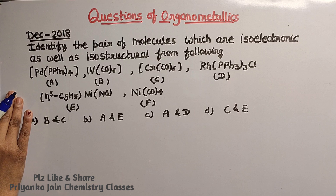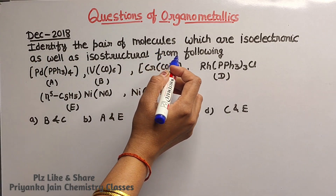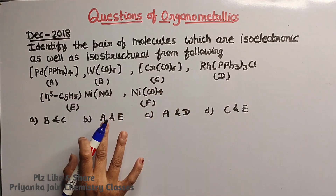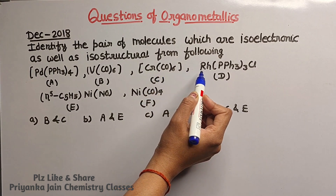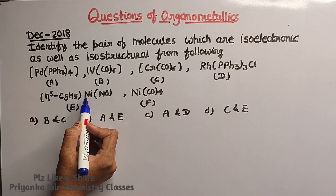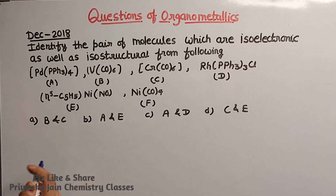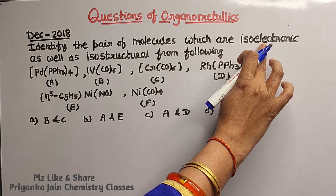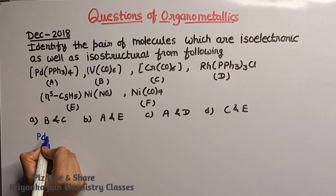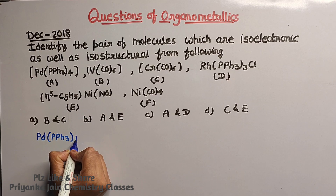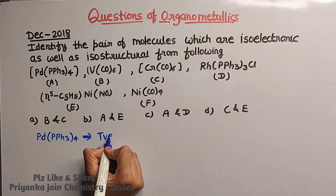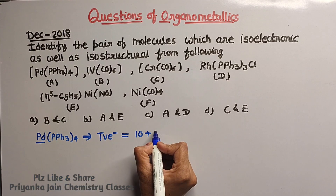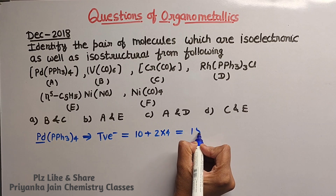This question from December 2018: identify the pair of molecules which are isoelectronic as well as isostructural from the following — Pd(PPS3)4, V(CO)6, Cr(CO)6, Rh(PPS3)3Cl, η5-C5H5NiNO, and Ni(CO)4. Six molecules are given. We have to find the total number of electrons to identify isoelectronic species. For Pd(PPS3)4: palladium has 10 electrons plus PPS3 donates 2 electrons, so 2×4 = 8, giving 18 electrons total.